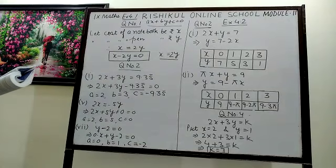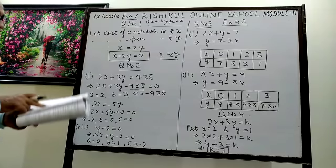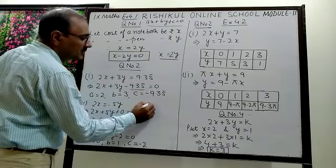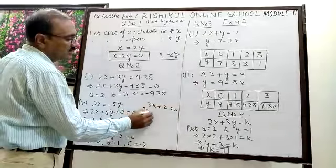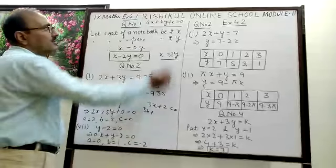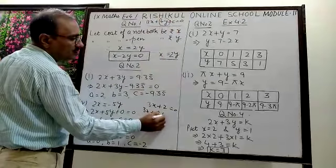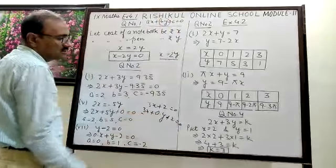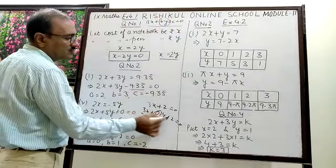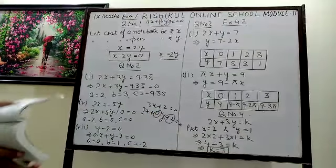Similarly you can solve the sixth part also: 3x plus 2 equals 0. In place of By, you write 0 into y, giving 3x plus 0y plus 2 equals 0. So A is 3, B is 0, and C is 2. This is the end of exercise 4.1.